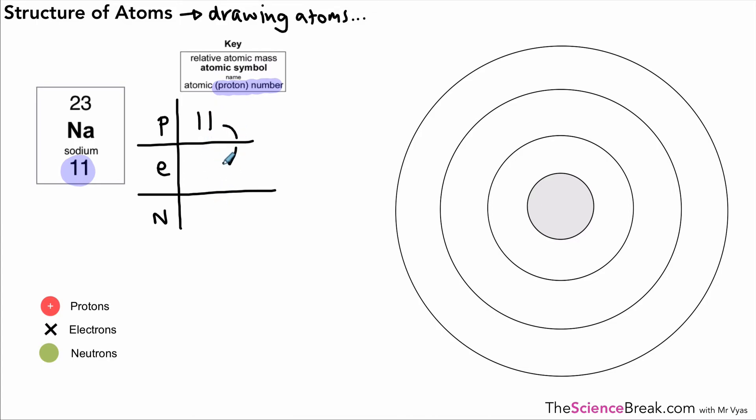Electrons are very easy too—the number of electrons in an atom is always the same as the number of protons. They both carry opposite charges and balance out in an atom. For the number of neutrons, remember the number at the top—the atomic mass—is protons plus neutrons. If we take protons off that, we're left with neutrons. So the neutron number is 23 minus 11, which is 12. Now we have the key information to draw out this atom.